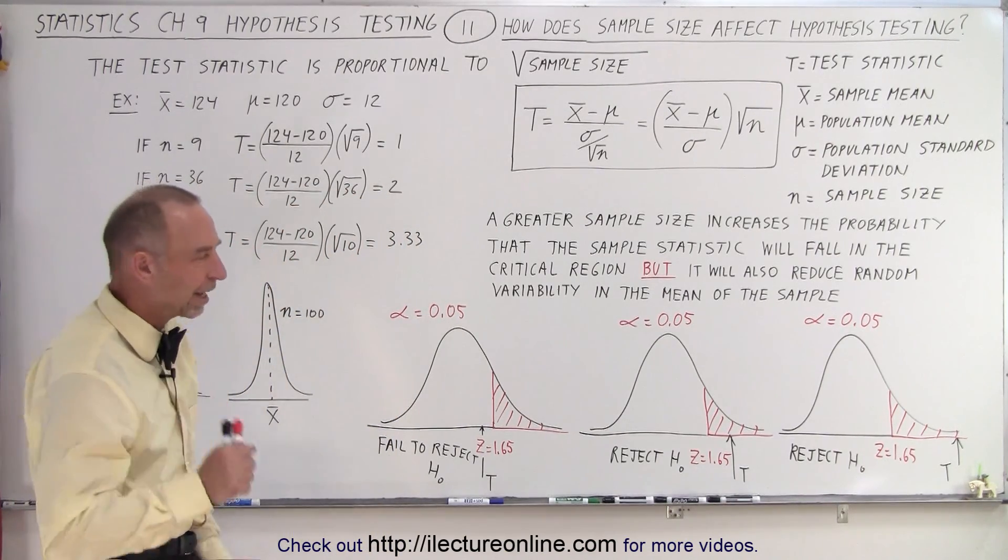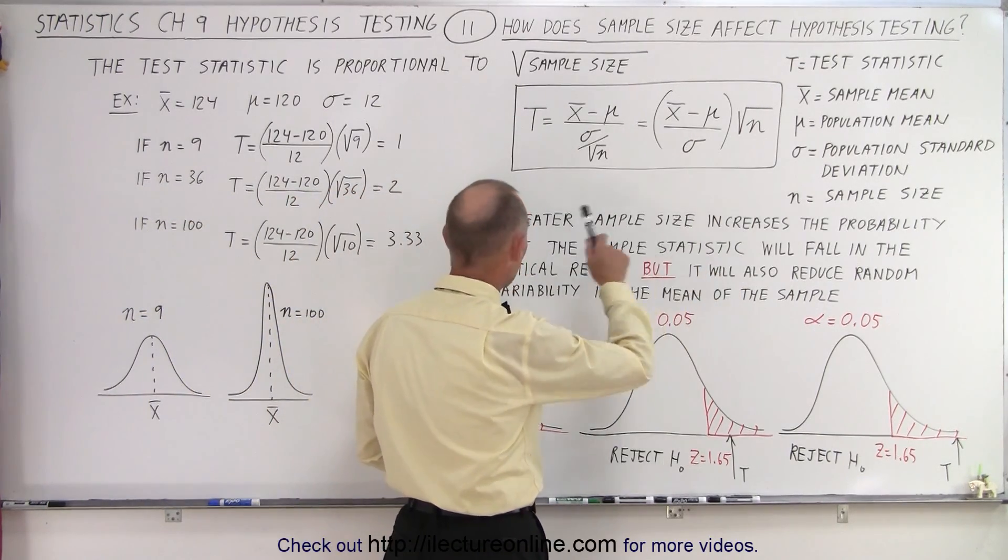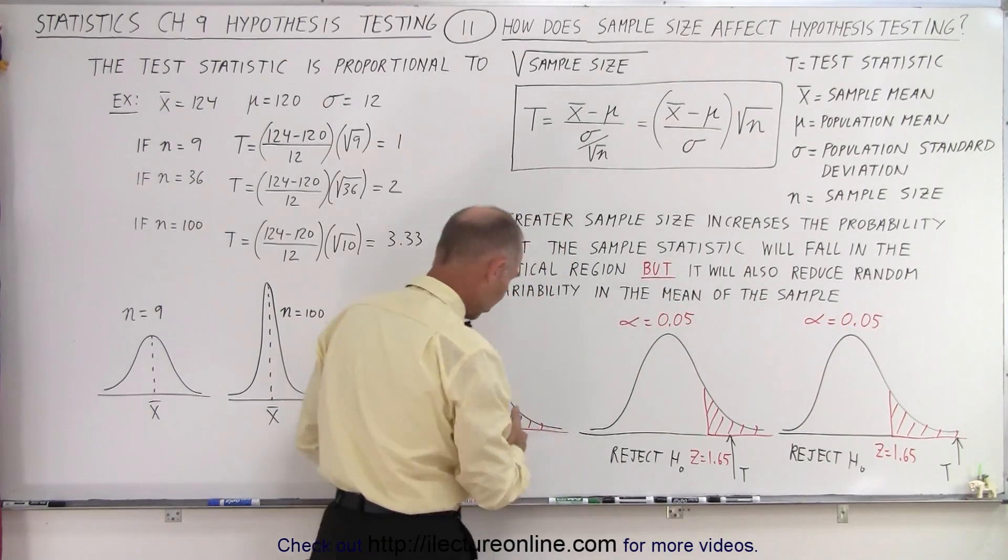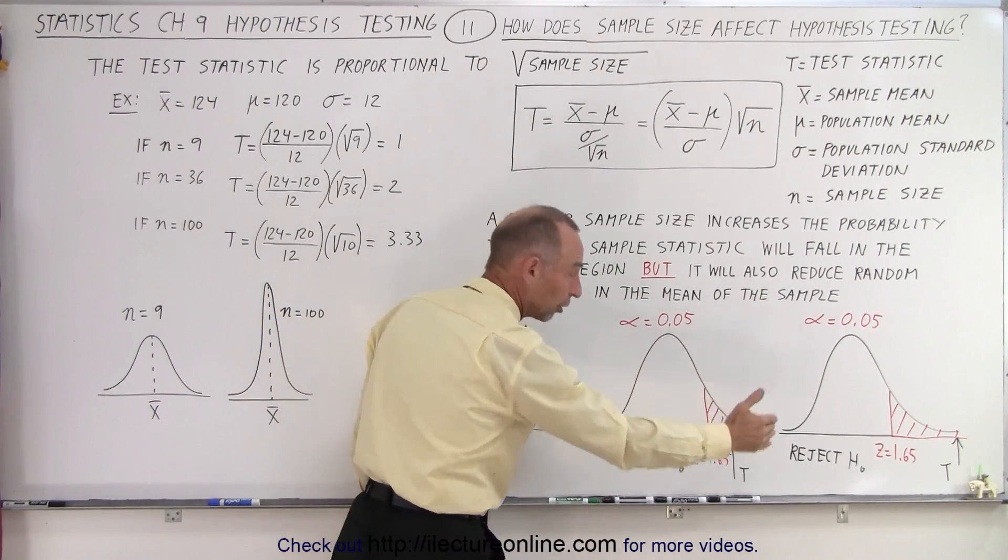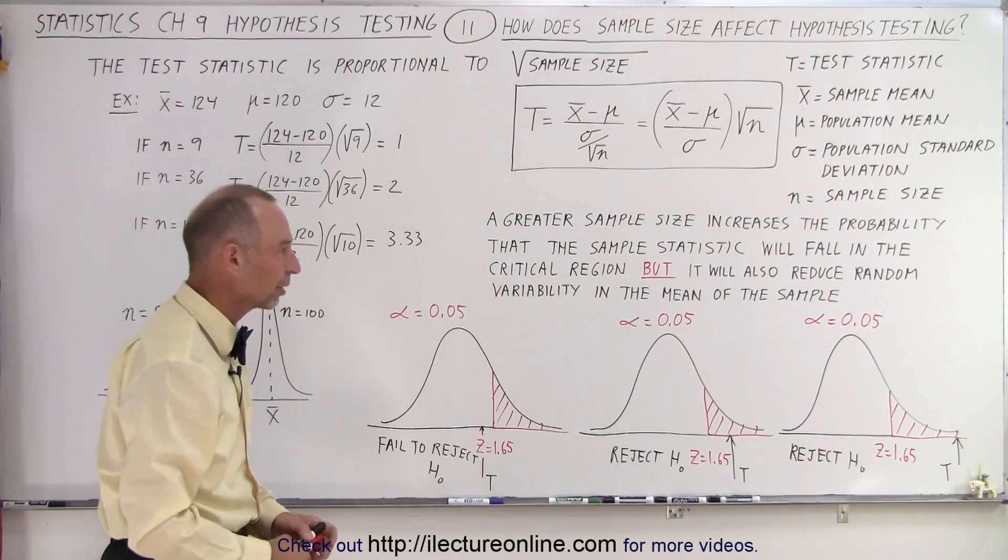But then there's the second aspect of it. A greater sample size increases the probability that the sample statistic will fall in the critical region. We saw that. The sample statistic gets larger as we use a larger sample size and it's more likely than to fall in the critical region.